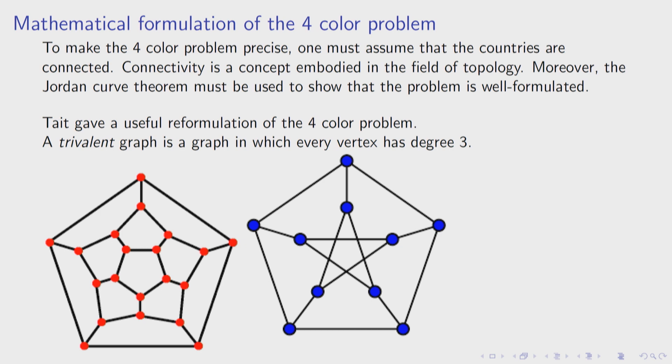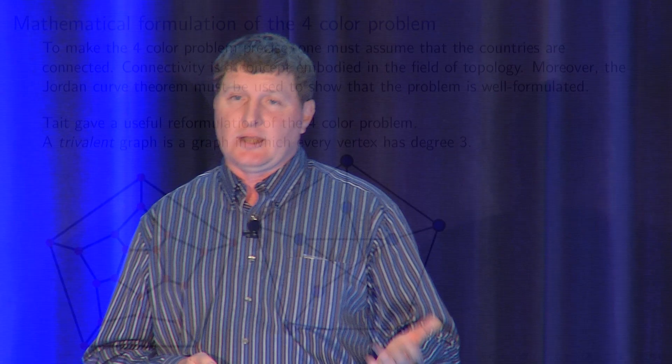To make this precise, the boundaries between the countries should be curves — this is a mathematical model for what a map looks like. To make that precise, you also need the Jordan curve theorem, which says that a non-self-intersecting closed curve in the plane actually bounds a connected region that is topologically a disk. There is some serious mathematics that goes into that, which is something that Georges Gonthier and his collaborators formalized.